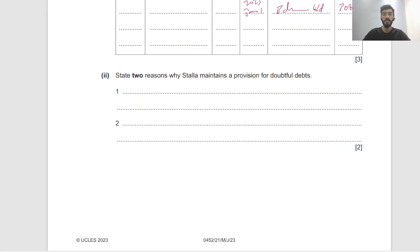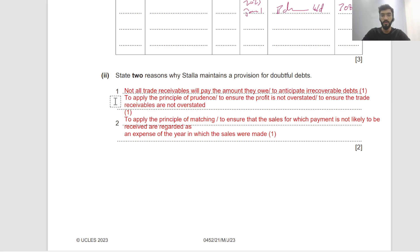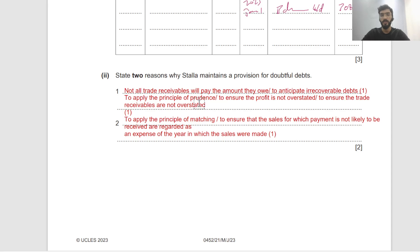I'll also show you the mark scheme answer. To apply the principle of prudence is accepted — you can write just that, or proceed and say to ensure that profit is not overstated and trade receivables are not overstated. There are slashes where you can choose whether to write the first line or the second line. I would say write 'to apply principle of prudence' and then explain how that happens, because you have a couple of lines.